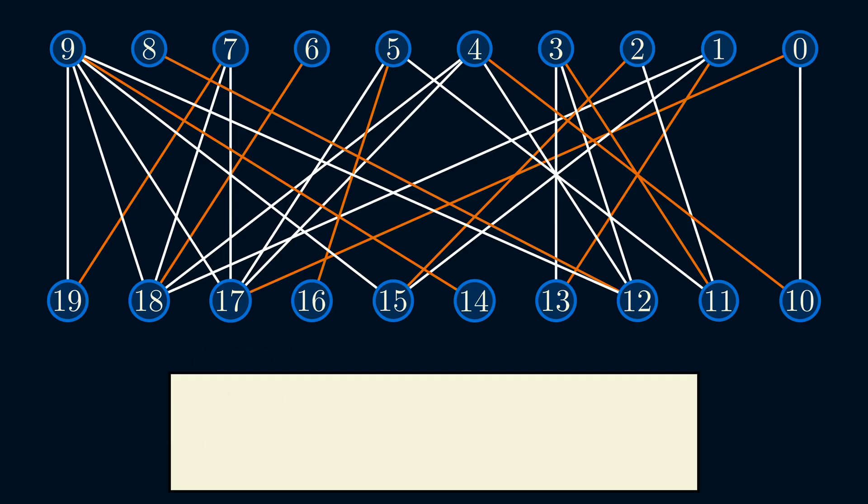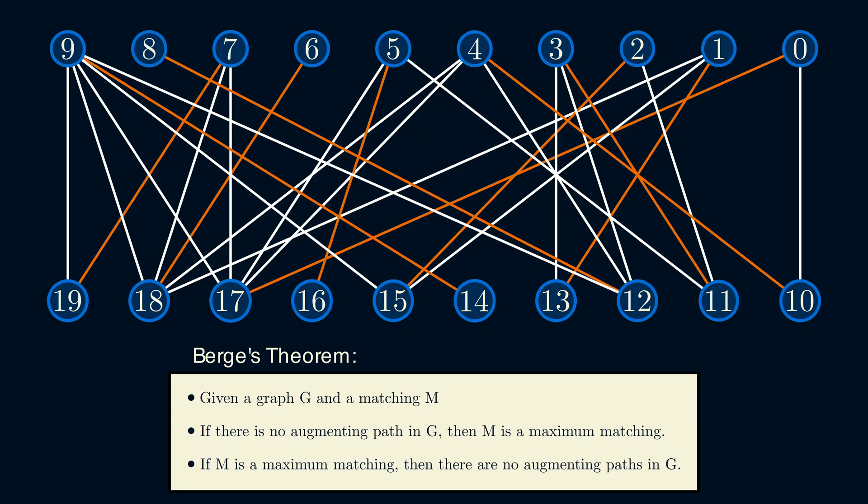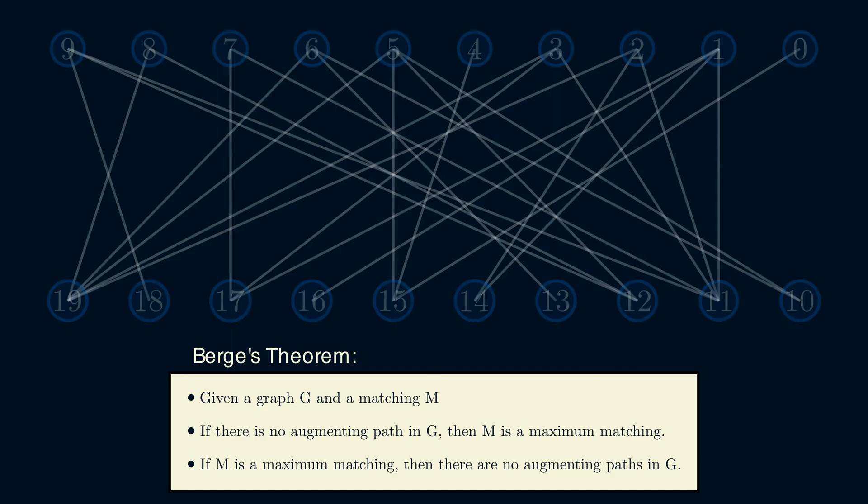There is a famous theorem in graph theory that answers this, and it's called Berge's Theorem. It states, given a graph G and a matching M, if there are no augmenting paths, then M is, in fact, a maximum matching. And if M is a maximum matching, then there are no augmenting paths.